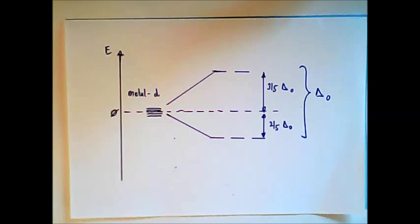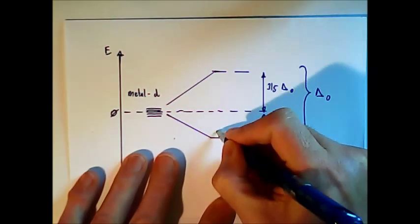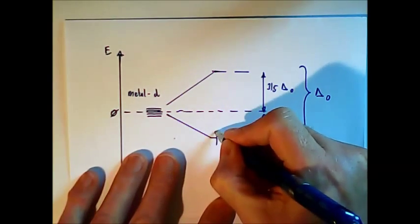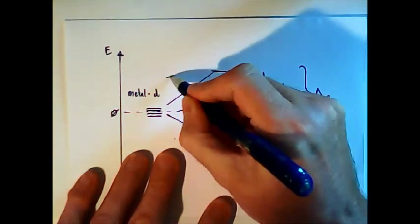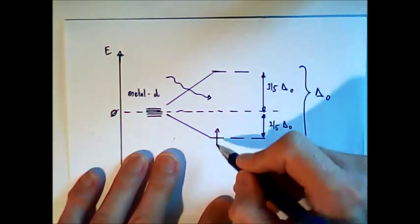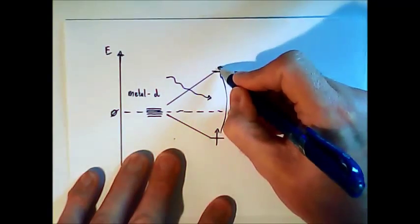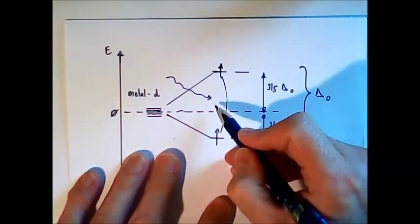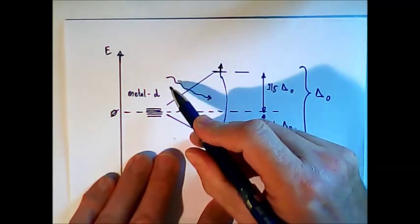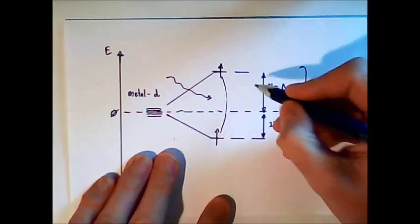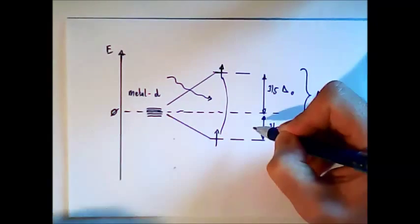So the color comes from the fact that one electron in the lower state, under the influence of visible light, will go into a higher state, and in this way absorbs light. The energy of the light corresponds to the energy difference we have in the crystal field splitting.